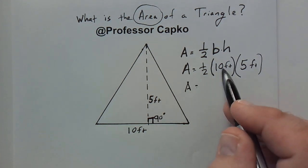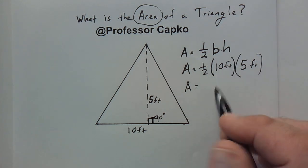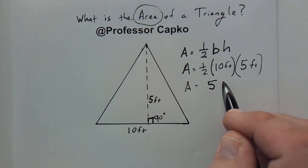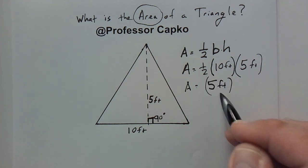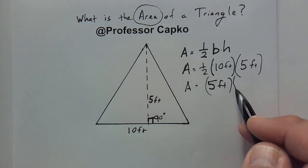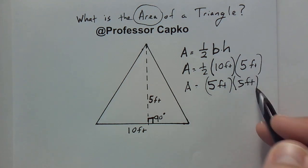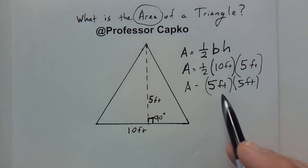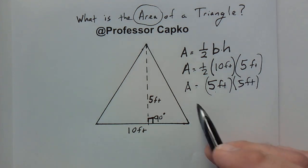All right, let's go ahead and figure this out. We can multiply 1/2 times 10 feet. 1/2 of 10 is 5, so this becomes 5 feet, and I'll just bring down the 5 feet here. We haven't done anything to that one yet. So now we have 5 feet times 5 feet.